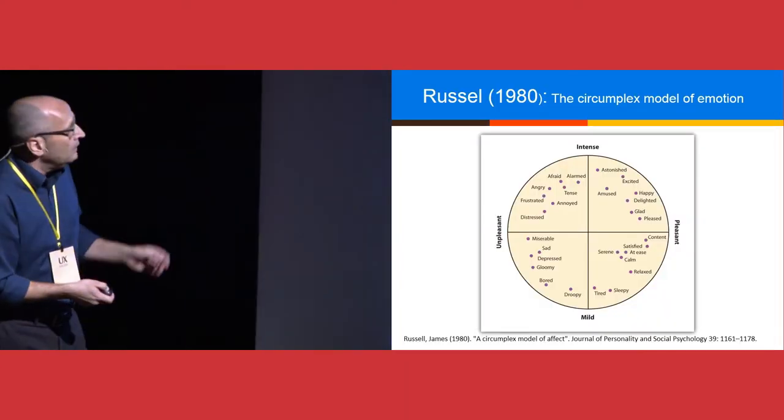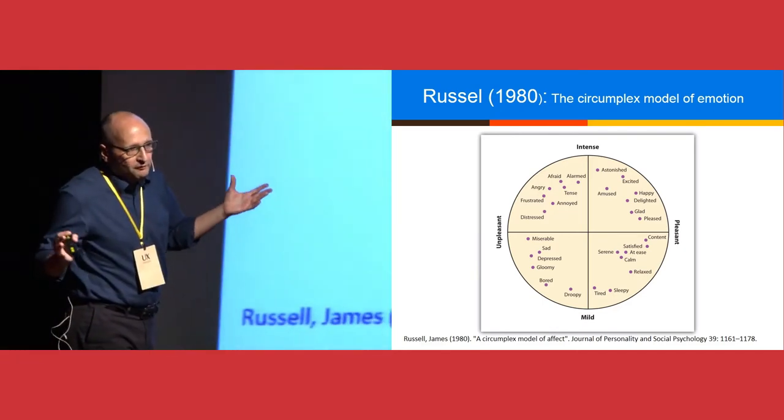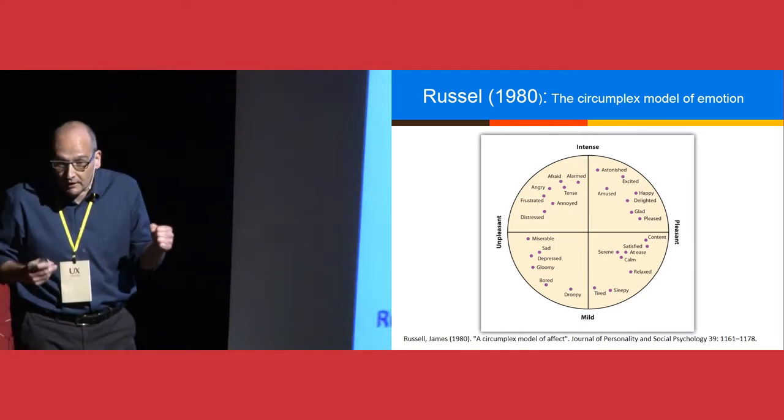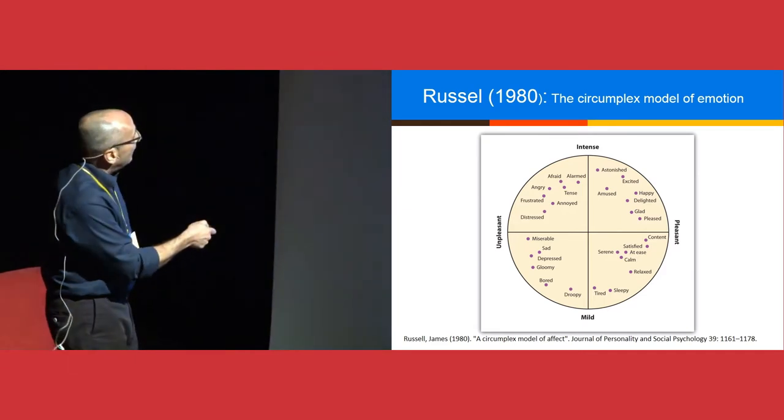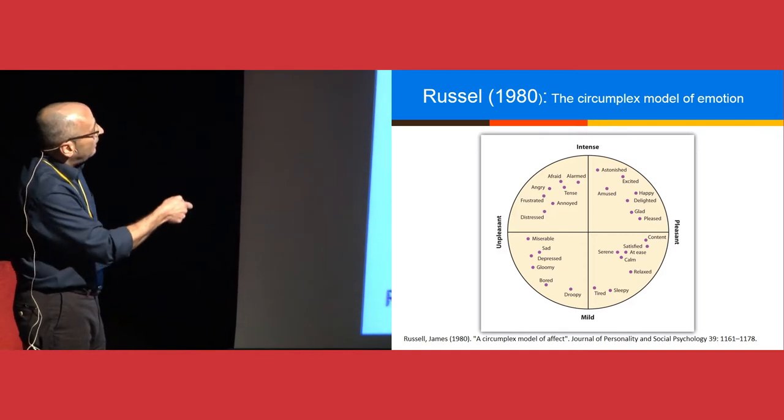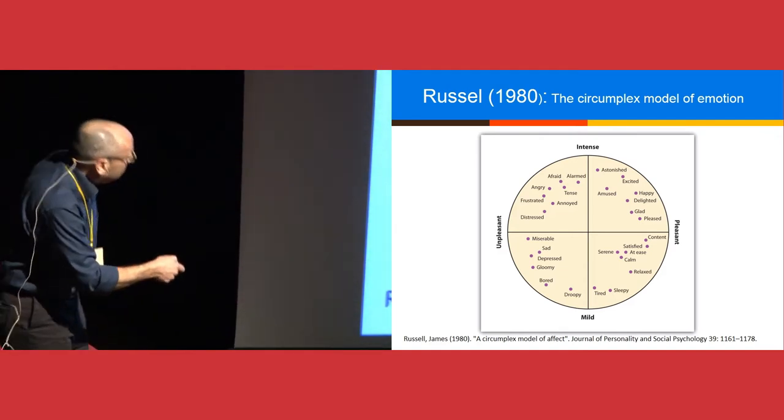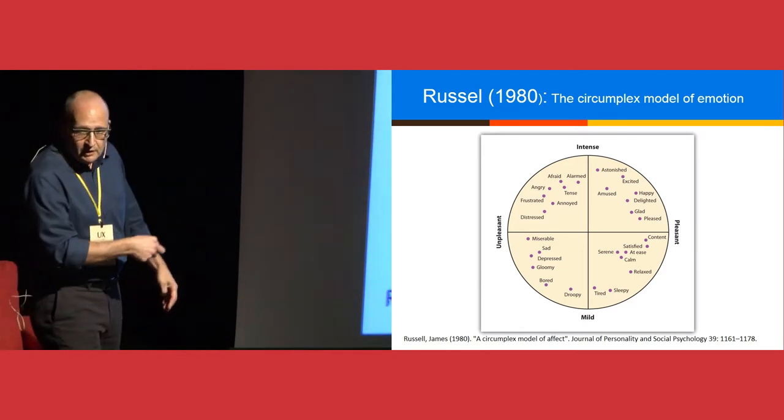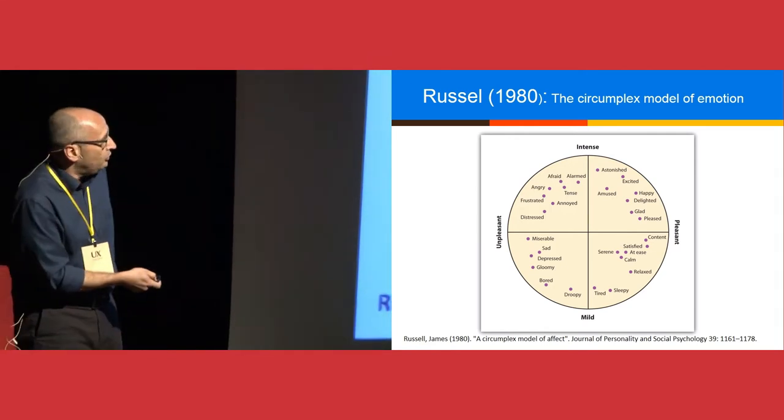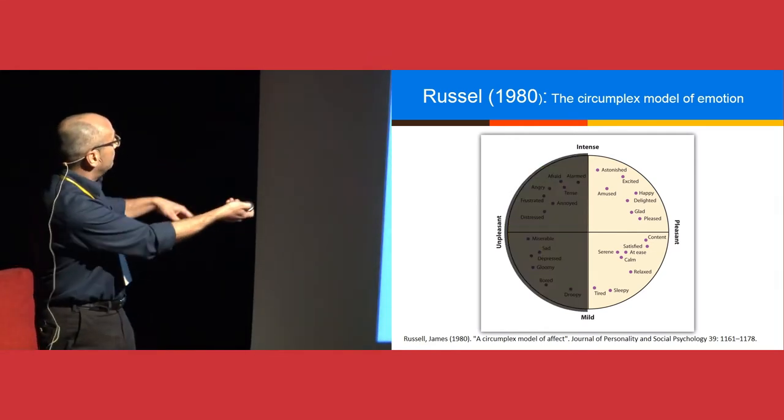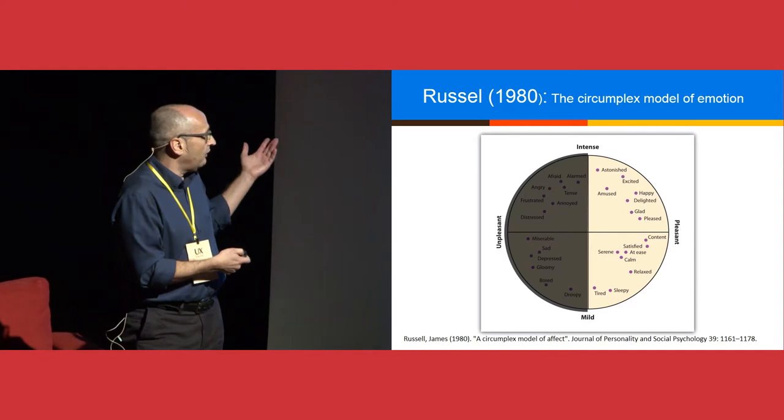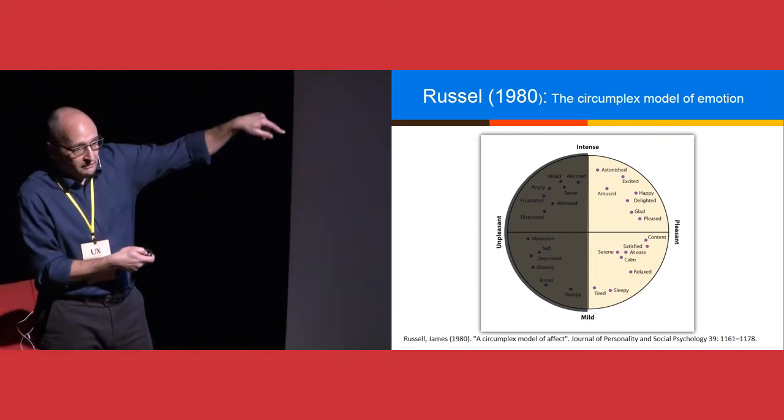This is basically emotions. Now when we talk about emotion, we tend to think that there is no way of mapping emotions. It looks so weird, it looks so different, I mean vague in a way, but there are theories for that. This is a theory by Russell.